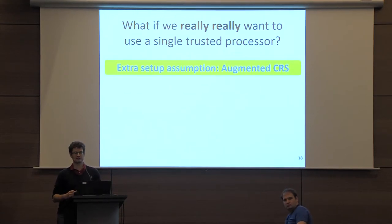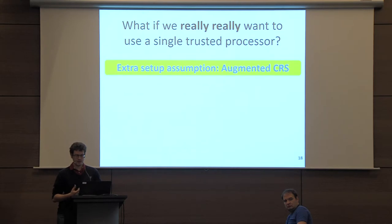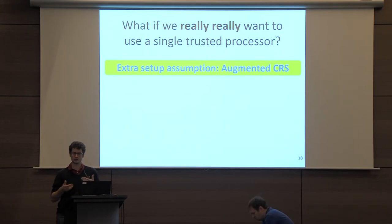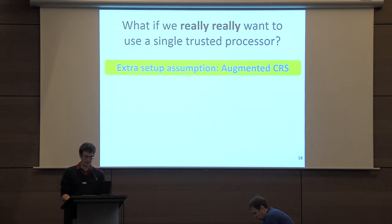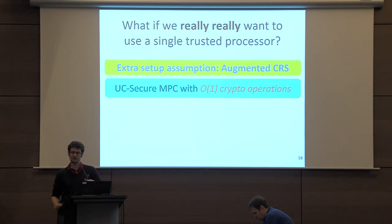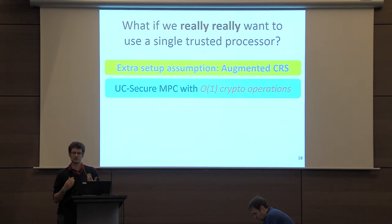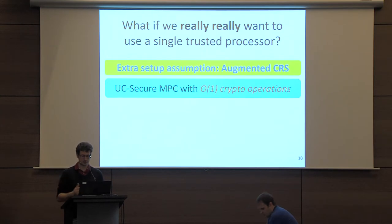Without giving a precise definition, you can think of the augmented common reference string as a setup that for honest parties is essentially the same as a standard CRS. But it also allows malicious parties to query for a so-called identity key — essentially a signature of the party's identity that is publicly verifiable. It's important to note that honest parties will never have to interact with this CRS during the protocol.